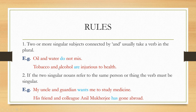'Tobacco and alcohol are injurious to health.' So tobacco and alcohol — two singular nouns — are joined with the help of 'and', so it becomes a plural form, a plural subject. Therefore the plural verb 'are' is used: 'are injurious to health.'